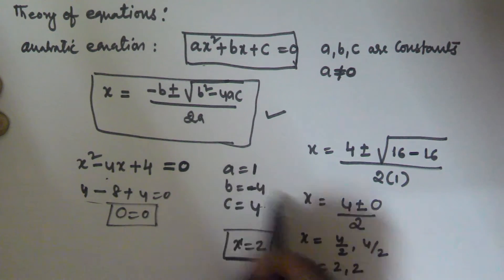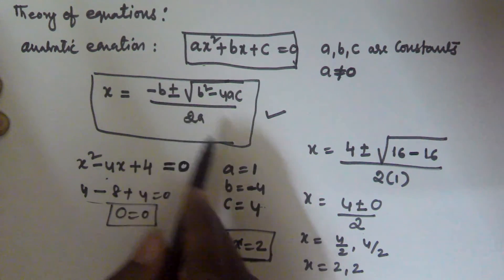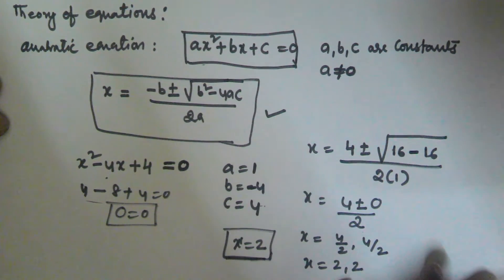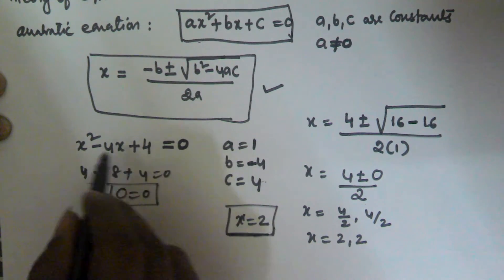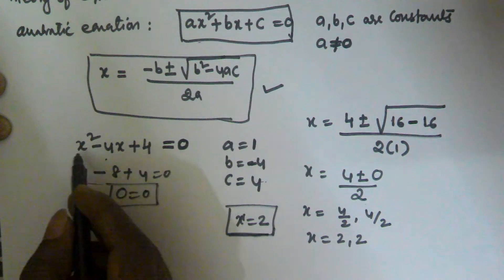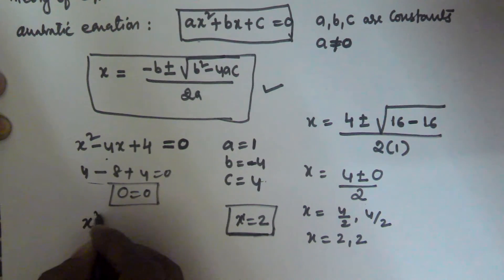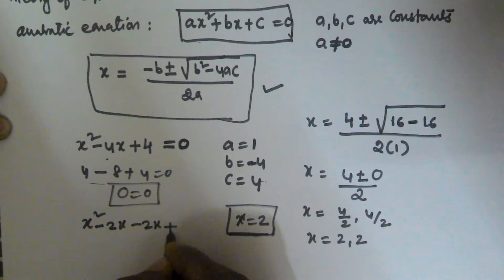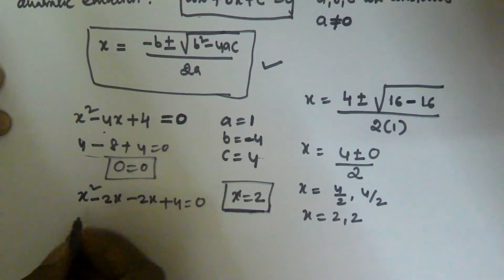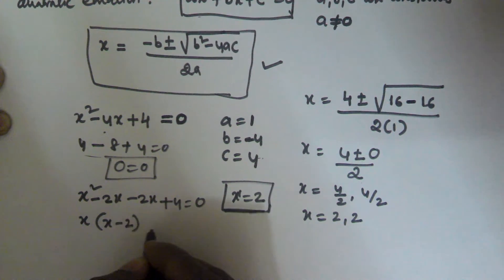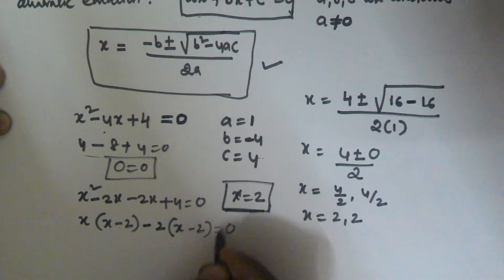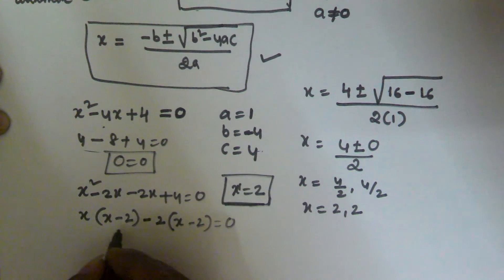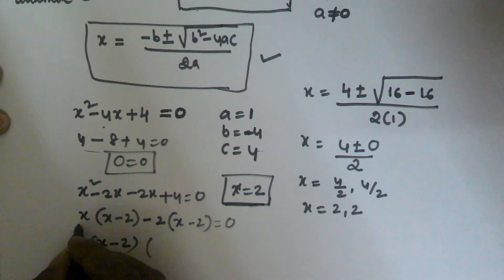There is another method to find the roots: the factorization method. For this equation, we can write x² − 4x + 4 = x² − 2x − 2x + 4 = 0. Taking x from the first two terms and 2 from the last two, we get x(x − 2) − 2(x − 2) = 0.